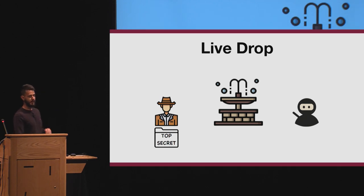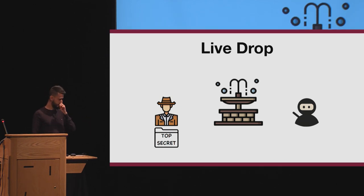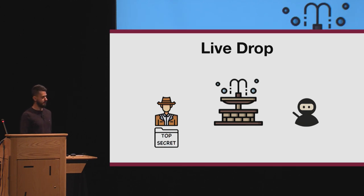Let's talk about a live drop — you may have seen this technique in movies. It allows spies to share secret information. Suppose there is an organization composed of people whose identities are secret, but the only thing you know is their job: there are detectives, spies, ninjas, and so forth. Let's assume that a detective needs to give top secret information to the ninja.